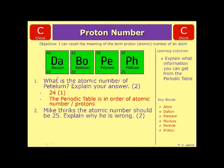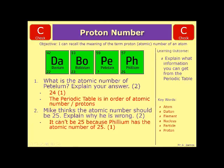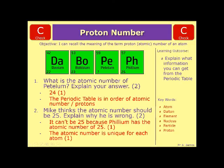The second part says Mike thinks the atomic number should be 25 — explain why he is wrong. It can't be 25 because philium already has the atomic number of 25. So basically, there is another element that already has an atomic number of 25, and the atomic number is unique for each atom — so you can't have two different atoms with the same atomic number.